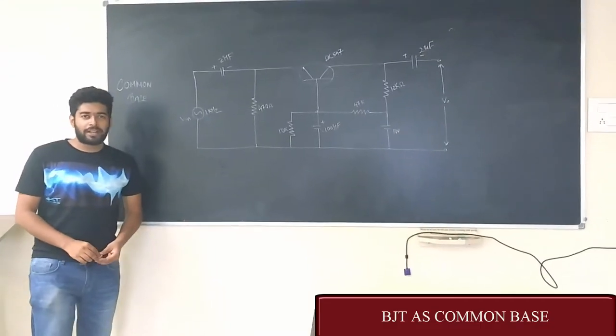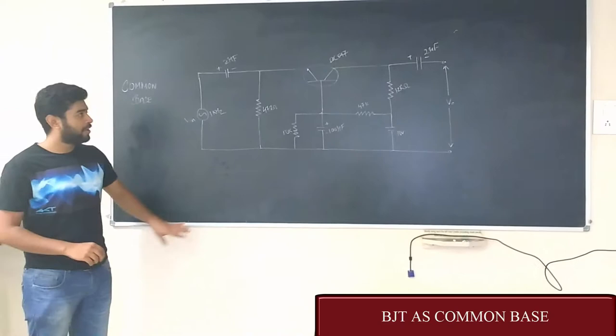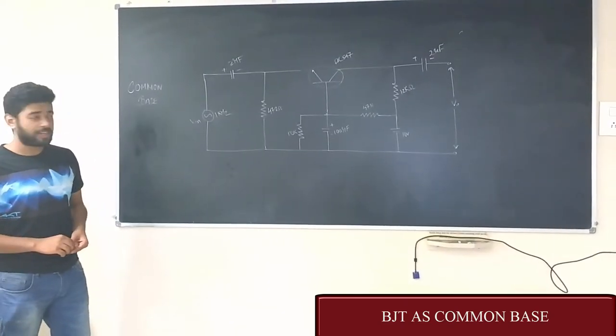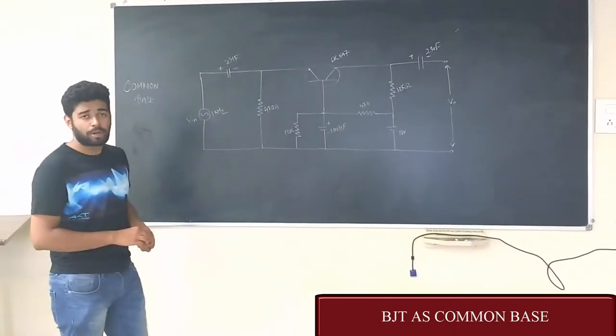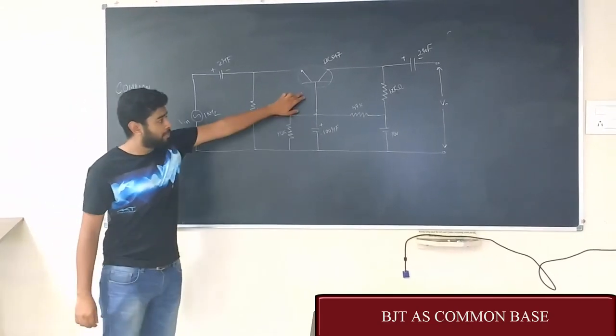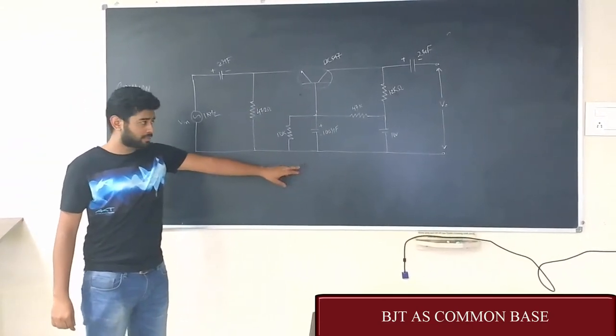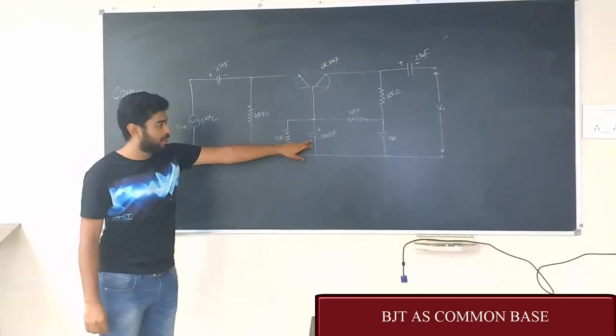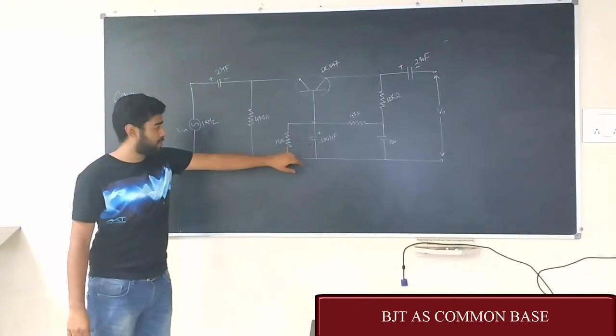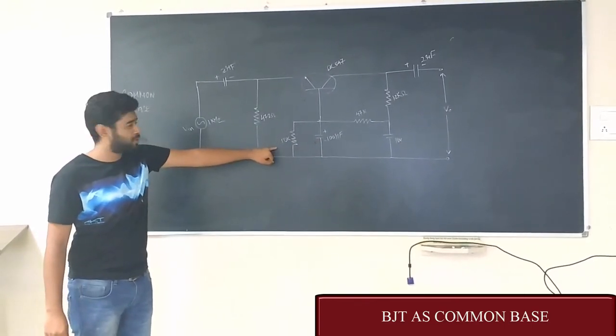Hello guys, welcome to Analog Electronics Lab 1. Today we are going to implement BJT in Common Base Configuration. It is called Common Base Configuration because the base is grounded and this is the bypass capacitor and this is the base resistance which is of 10k value.